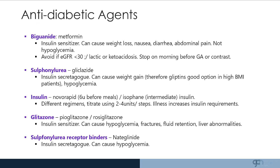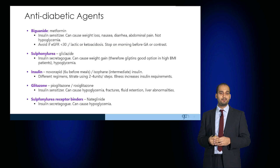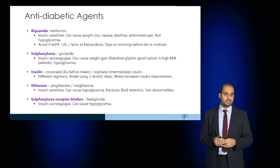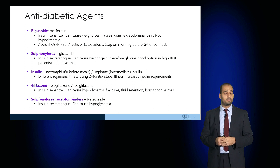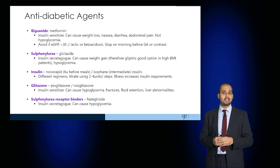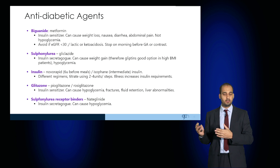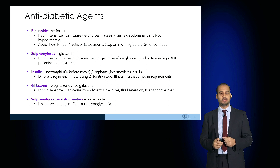Insulin regimens require careful titration. Glitazones such as pioglitazone or rosiglitazone are insulin sensitizers that can cause hypoglycemia but are unfortunately associated with fluid retention, fractures, and liver abnormalities. Sulfonylurea receptor binders such as nateglinide are secretagogues which can also cause hypoglycemia.